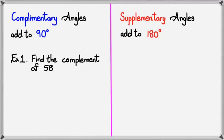Let's say there's a question like find the complement of 58 degrees, or we can say find the complementary angle of 58 degrees. Now, because the two angles add up to 90 degrees, all we have to do is